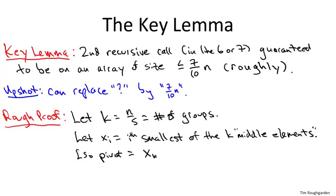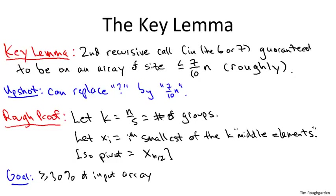We're trying to prove that our proposed pivot x_{K/2} gives a 30-70 split or better — meaning at least 30% of elements are bigger than the pivot and at least 30% are smaller. I'm going to introduce a thought experiment, lay it out abstractly, do an example to make it clear, and then finish the general proof.